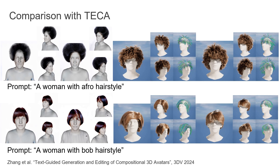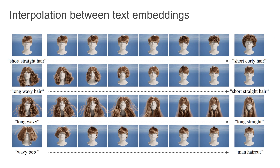Our geometry is also reconstructed at the strand level, thus containing higher frequencies and more details. Using our generative model, we can interpolate between different hairstyles by conditioning the diffusion model on a linear combination of text embeddings. Here we show interpolation results for several prompt pairs that describe hairstyles differing in length and texture. Notice that our interpolations preserve the realism of the generated hairstyles and achieve smooth transitions between different pairs.